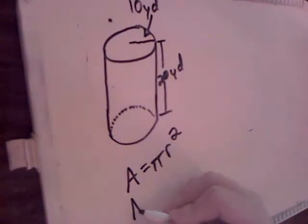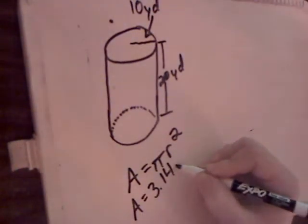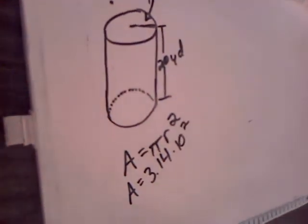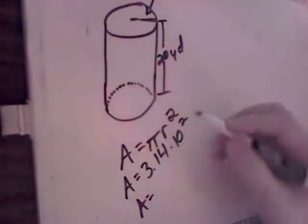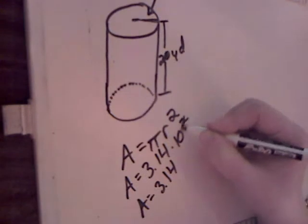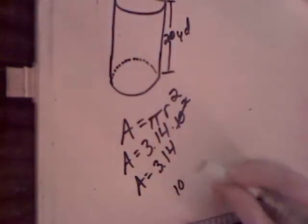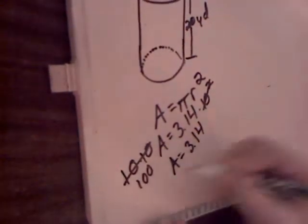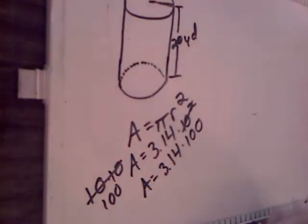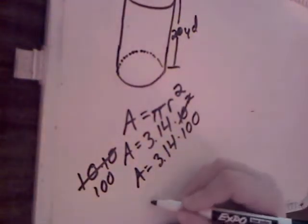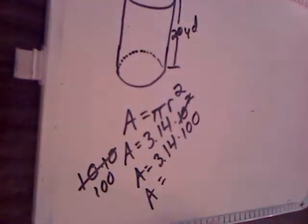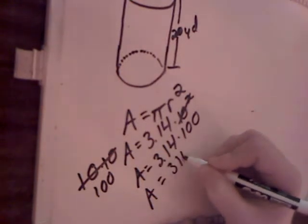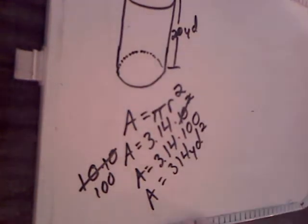I'm going to use 3.14 for pi. The radius, which is the distance from the center to the edge, is 10. The first thing I solve is 10 squared. 10 to the second power is 10 times 10. 10 times 10 is 100. Now I multiply 3.14 times 100 — that is 314 yards squared. Now remember, that was for one circle. We also need the other circle, so we're just going to double that — two 314s.